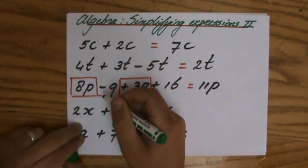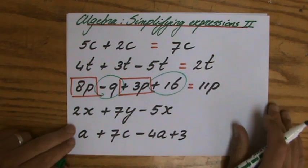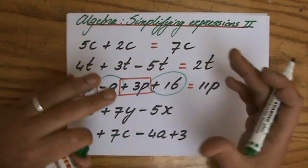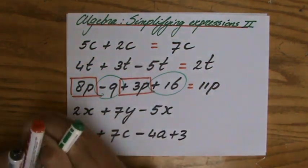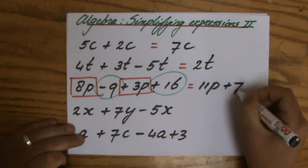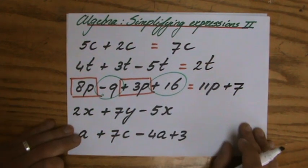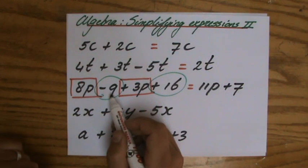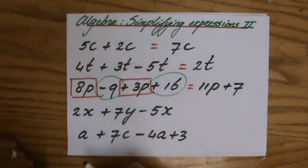Then moving on, I have a negative 9, which is a constant, plus 16. Those are also like terms. Minus 9 plus 16, or if that is easier for you, 16 minus 9. The answer for both ways is a positive 7. Careful that minus 9 belongs to the 9, not 8P minus 3P.